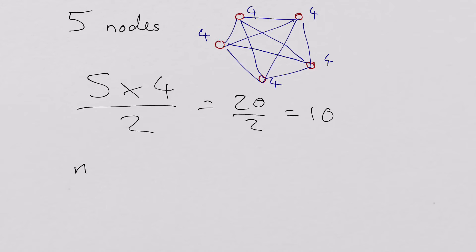So for n nodes, you should get n times n minus one. This is simple. You can't have one bigger than the number of nodes. And divide it by two.